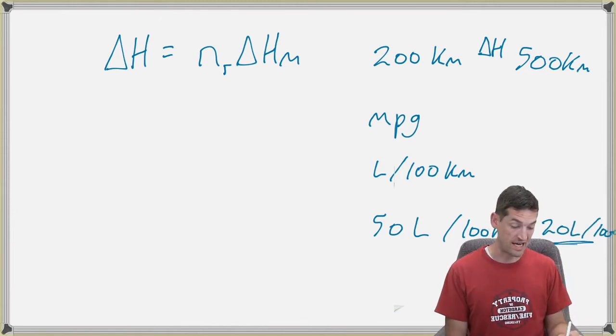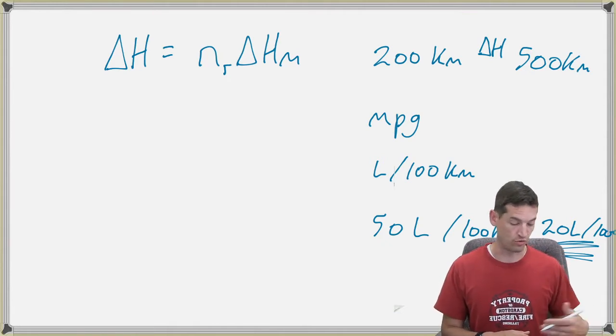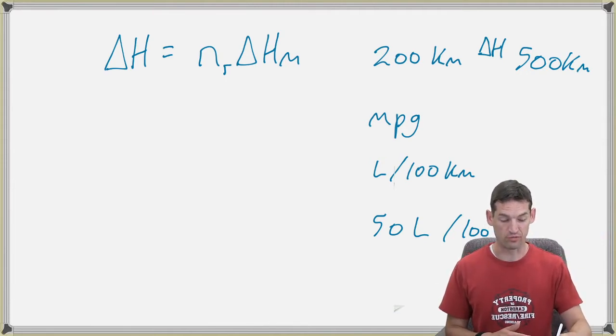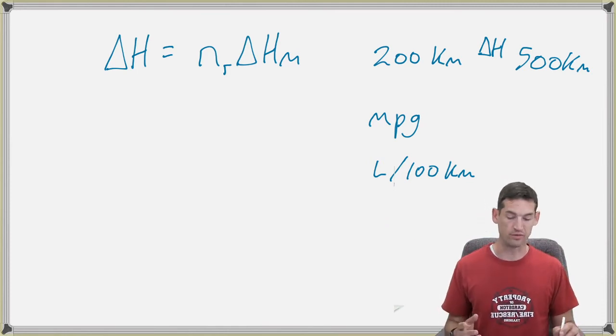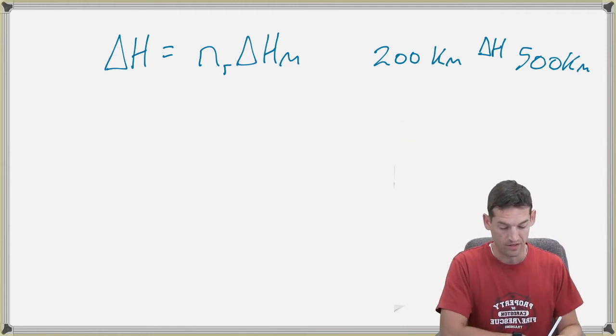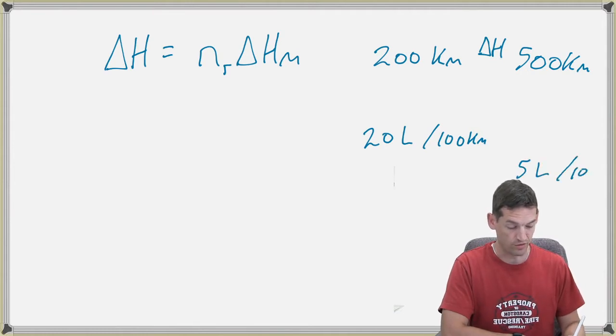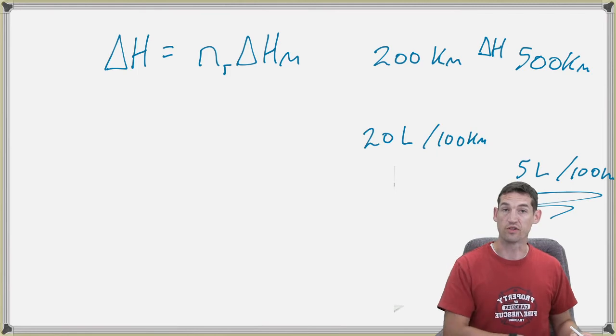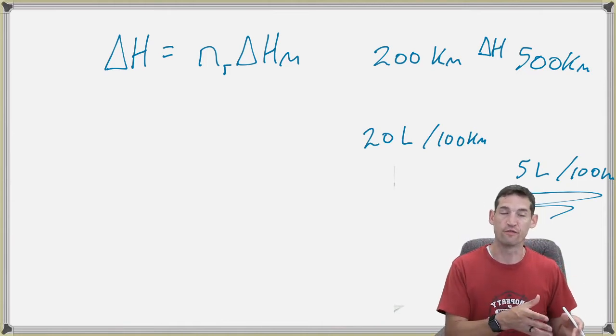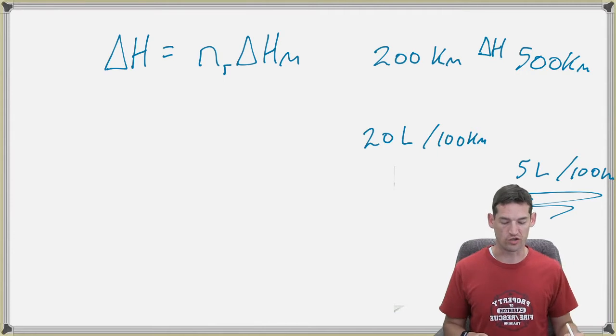So you might say it takes me to go 100 kilometers, it takes me 50 liters per 100 kilometers. And maybe this one is 20 liters per 100 kilometers. Well, now I can see that is a much better, more efficient car than the other one, because this one takes 50 liters to go roughly from here to Lethbridge. But without that information, just looking at the original 200 and 500, it's very difficult to tell. We could change that around. Let's say this car is 20 liters per 100 kilometers, and maybe the other one is like 5 liters per 100 kilometers. Now this one's much more efficient.